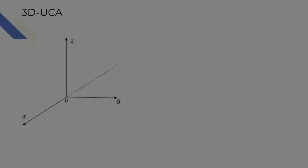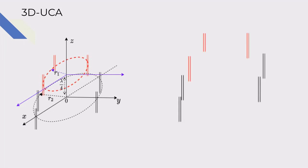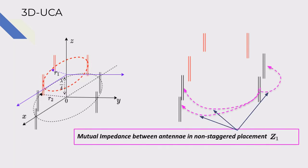In 3D uniform circle array with two rings of UCA, the bigger UCA with the radius R2 is placed on the XY plane, and the smaller UCA with the radius R1 is placed above the Z axis. The mutual couplings of the antennas in each UCA are the same as 2D UCA.